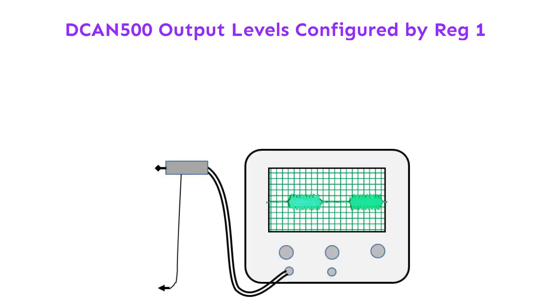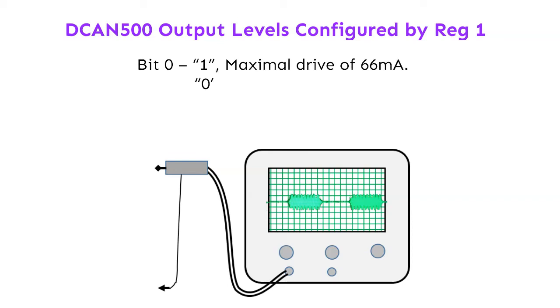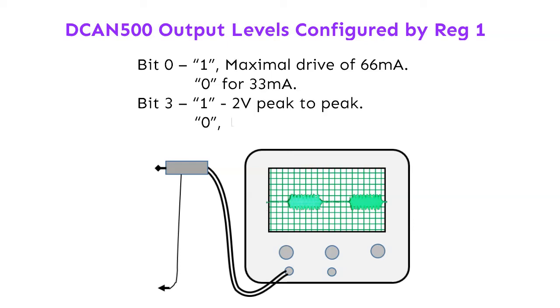Output levels are configured by REG 1. Bit 0: 1 for maximal drive of 66 mA, 0 for 33 mA. Bit 3: 1 for 2 volts, 0 for 1 volt peak-to-peak.